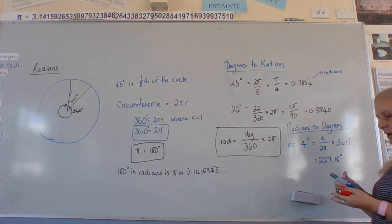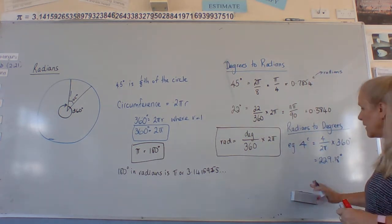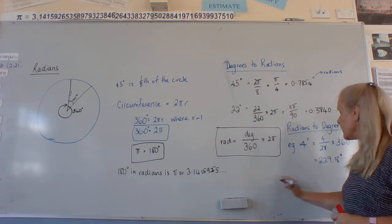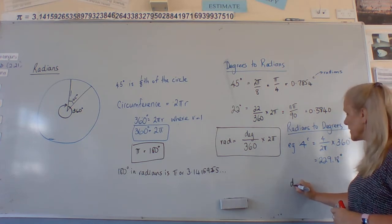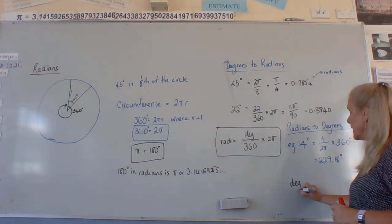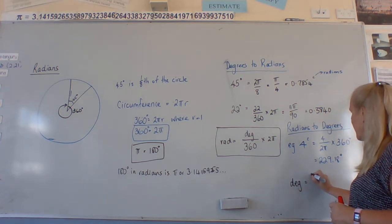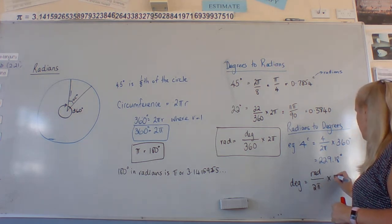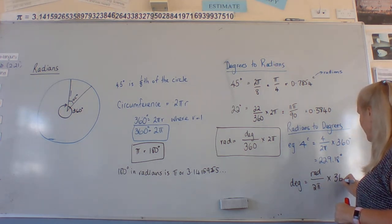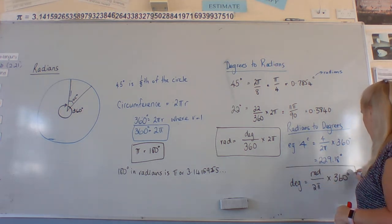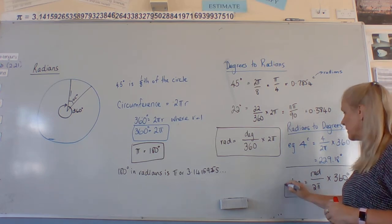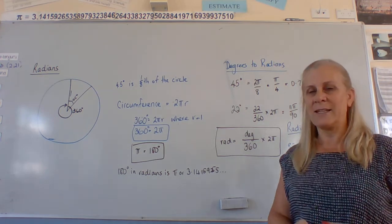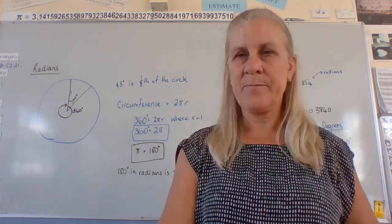So to summarise: for degrees to radians, take the degrees, divide by 360, and multiply by 2 pi. And for radians to degrees, take the radians, divide by 2 pi, and multiply by 360. And it's as easy as that — and we're going to learn what they're used for.